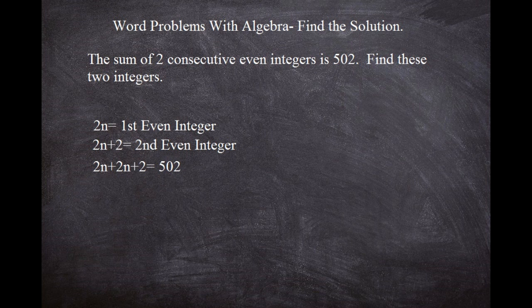Now let's go ahead and combine those both—those two n's—and make that 4n. So now we have 4n + 2 = 502. And now that little two there, we need to get that onto the other side.